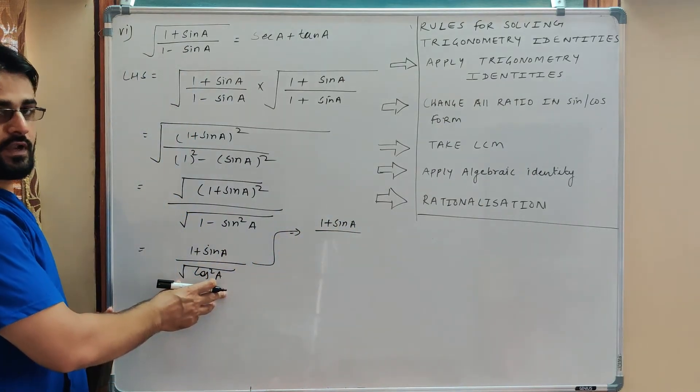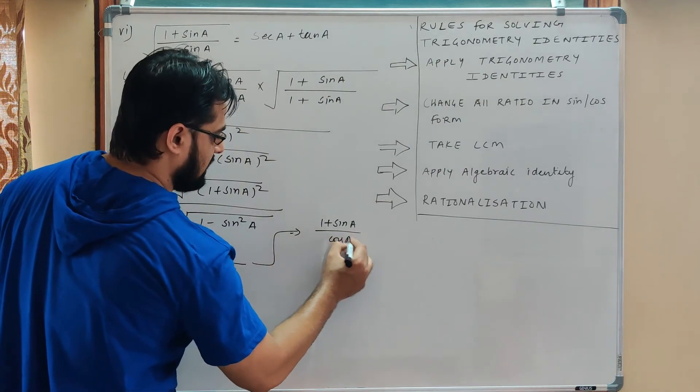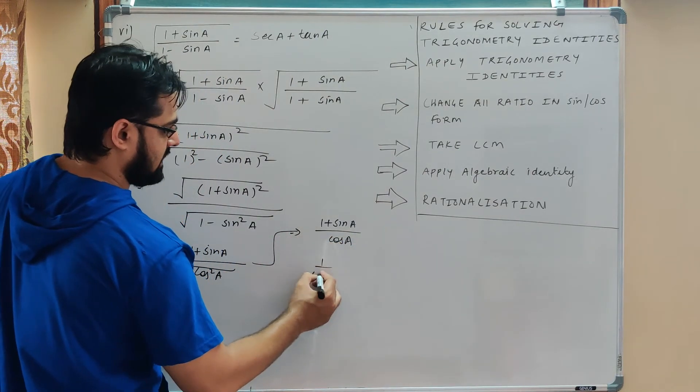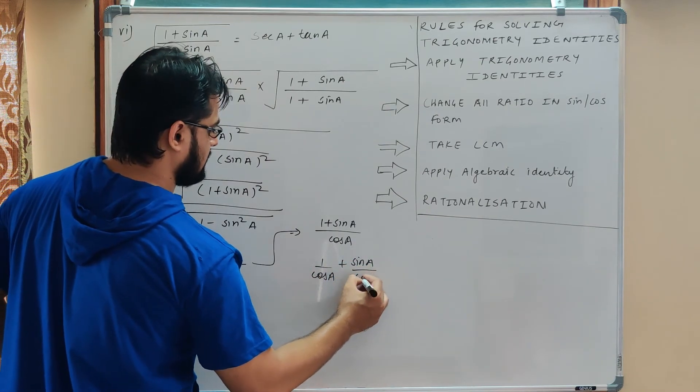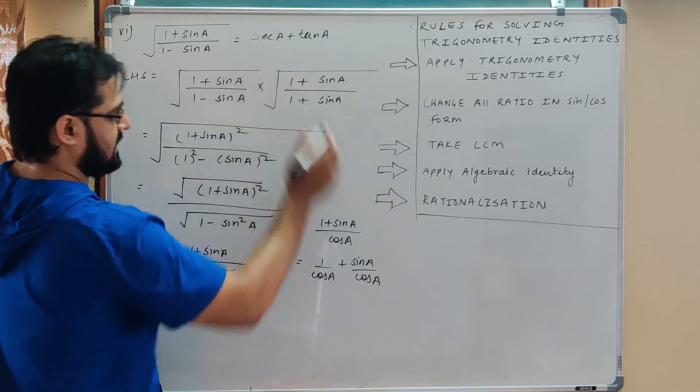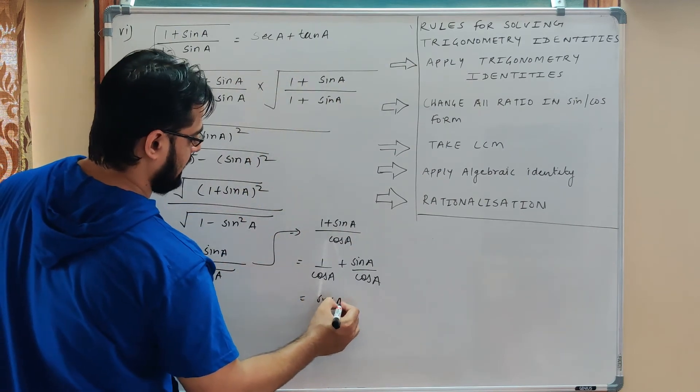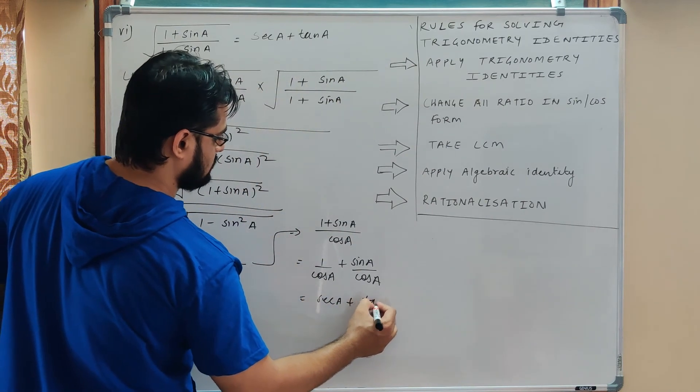So cos square A is under root, so we have cos A remaining. Separating, 1 upon cos A plus sin A upon cos A. So 1 upon cos A is sec A, and sin A upon cos A is equal to tan A.